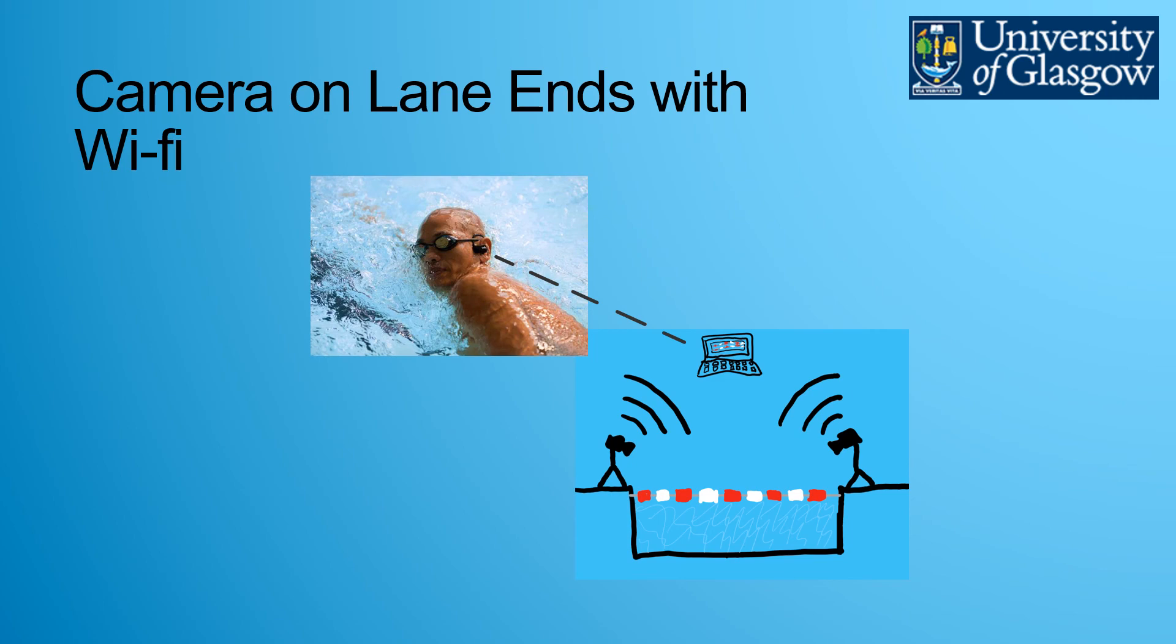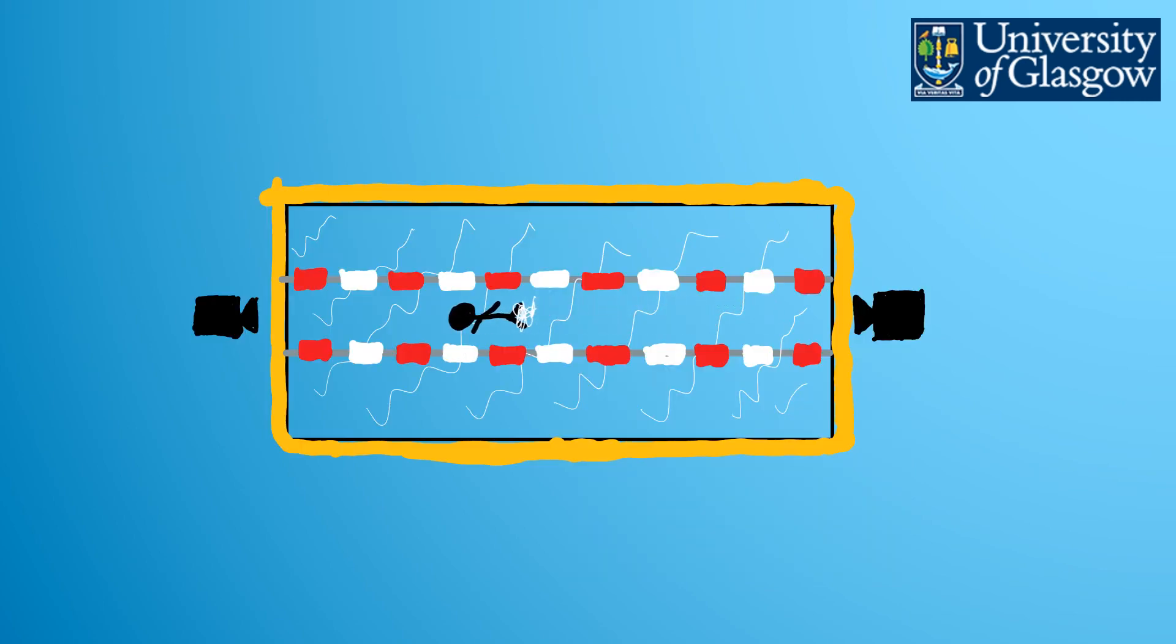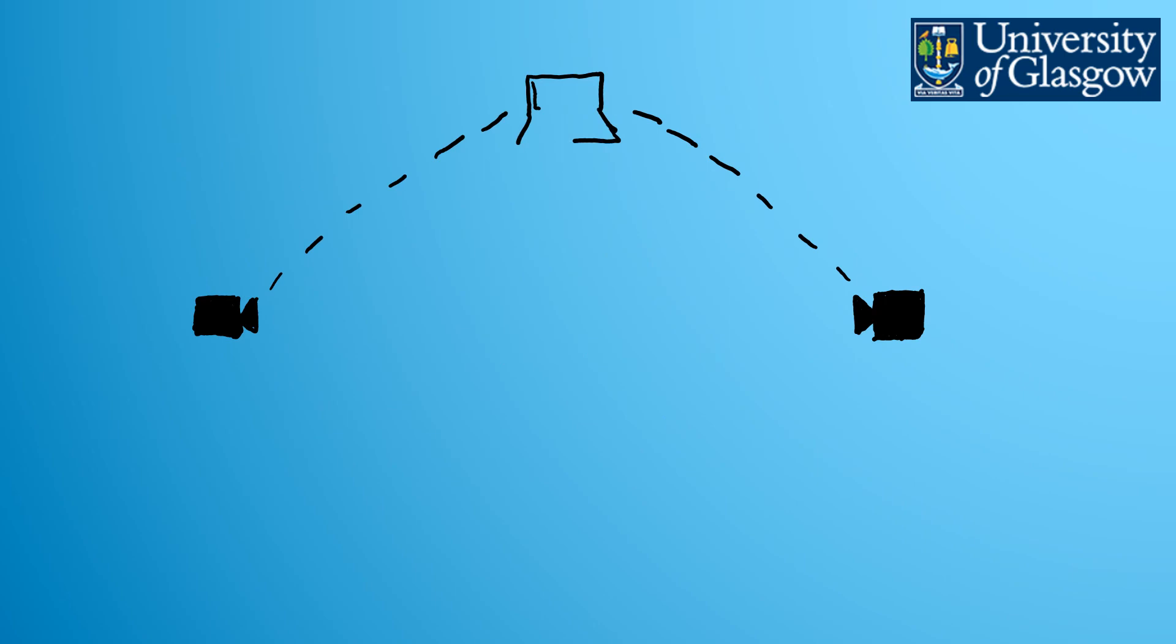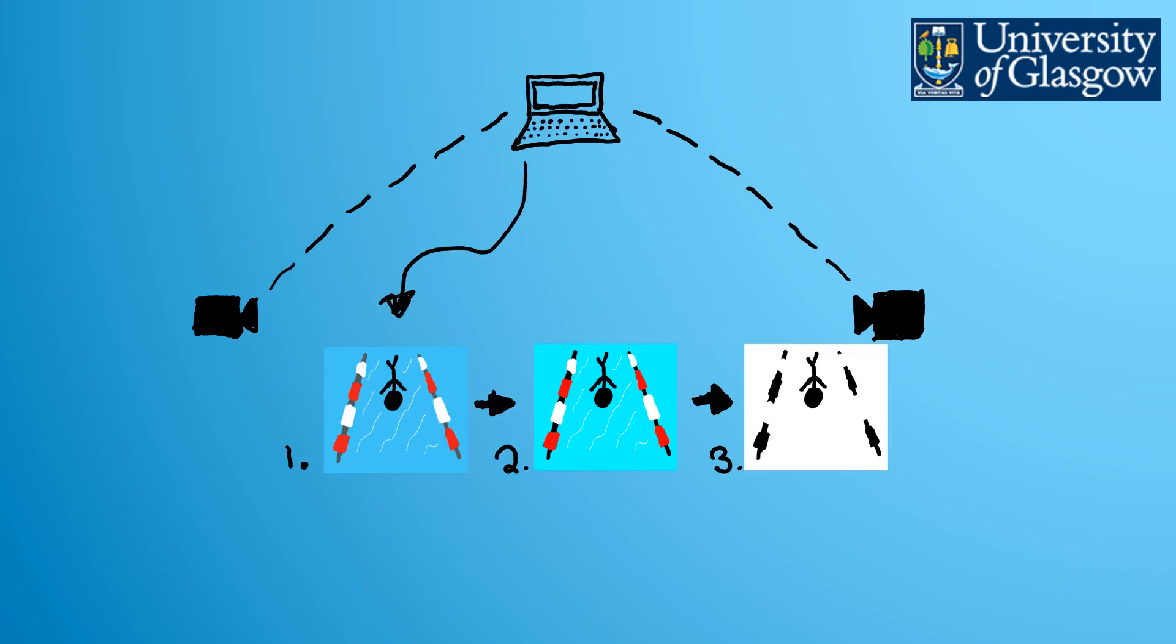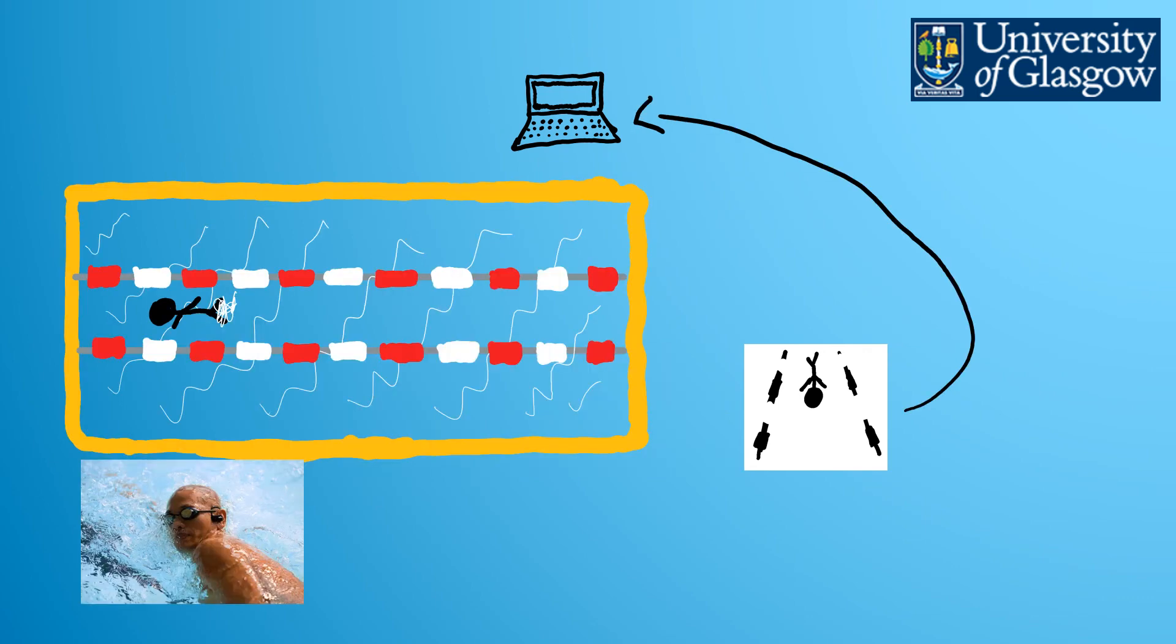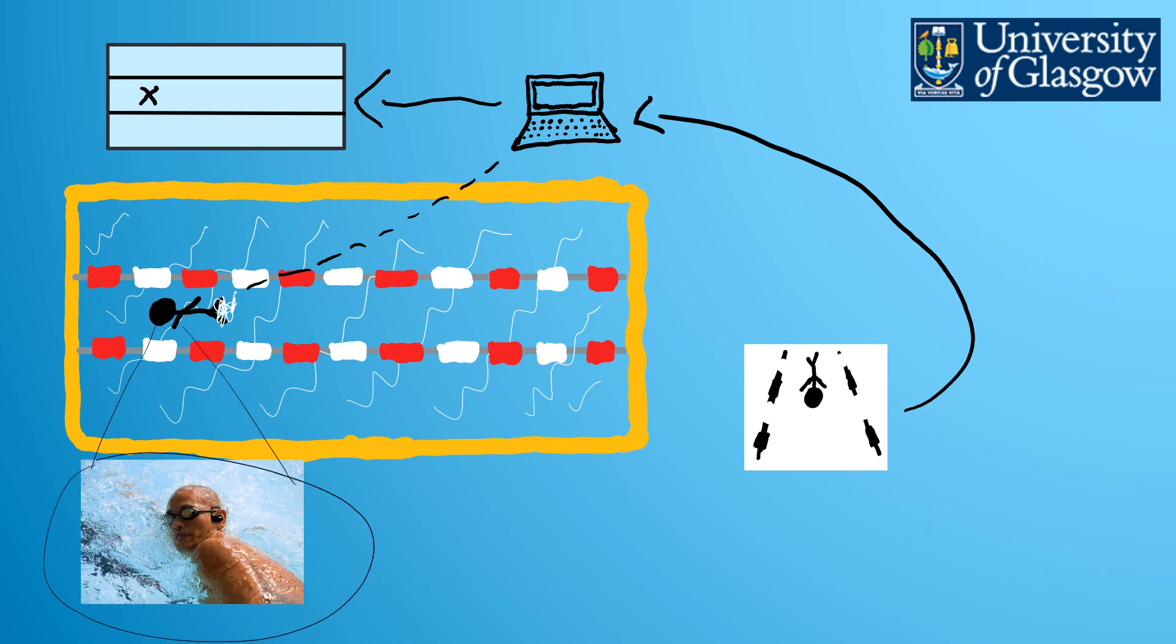My last idea was to have cameras that record a swimmer and use visual recognition software to be able to determine where they are. So the camera records a swimmer. It sends this data to a laptop via wi-fi. It performs visual recognition, and from using a predefined map you're able to pinpoint exactly where the swimmer is and send audio cues to the swimmer via Bluetooth.